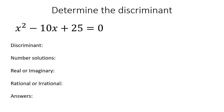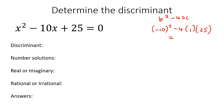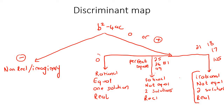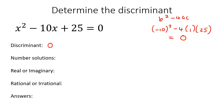Here's our last example. The discriminant is b squared take away 4ac — b is negative 10, a is 1, c is 25. If you work that out, you get 0. Going back to our map: a discriminant of zero means the roots are rational, equal, and there is only one solution — and it's real.